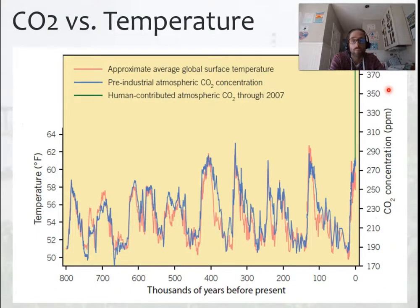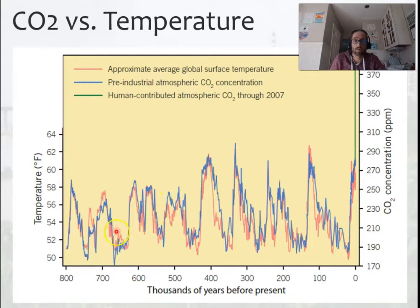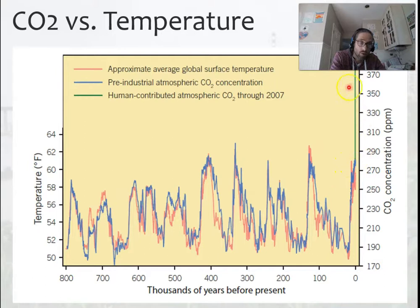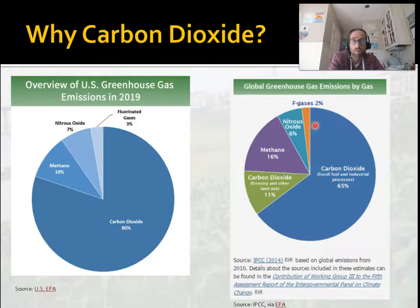Our concentration of CO2 is higher than it's probably been for the last million years or more. There's a chart showing temperature in pink and CO2 concentrations over the last 800,000 years, and you can see that temperature and CO2 levels are closely related. Here's where we are right now — up at the top, almost off the chart.